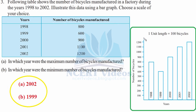This is your bar graph. The vertical axis will have number of bicycles and the horizontal axis will have years. The scale is one unit length equal to 100 bicycles. This is because the numbers range from 600 to 1200, which can be easily represented at this scale. Therefore, we go from 100 to 1200 with one unit length equal to 100 bicycles. The gap between bars and the bar width must be equal.